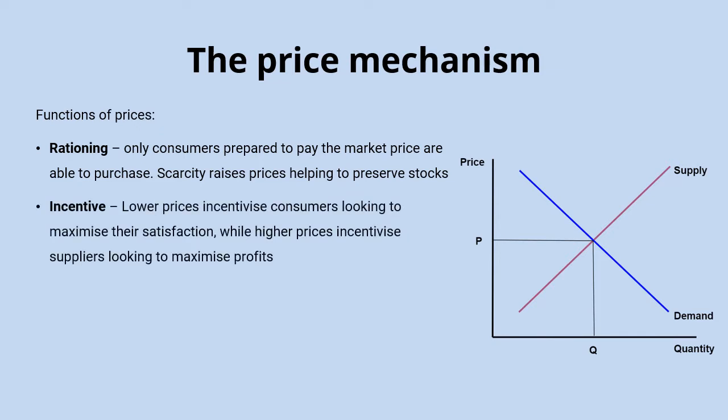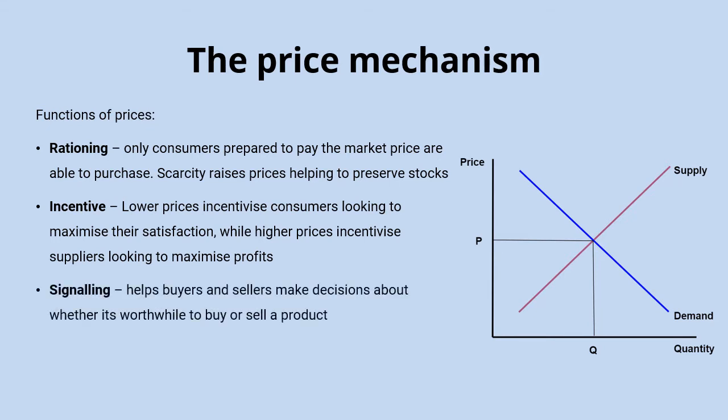We've also got the incentive function. Lower prices incentivize consumers who are looking to maximize their satisfaction — their utility. At lower prices they'll be getting better value for money, so they'll be incentivized to increase their quantity demanded. While higher prices are going to incentivize those suppliers who are looking to maximize profits, and the higher prices will provide more profits for those suppliers to access.